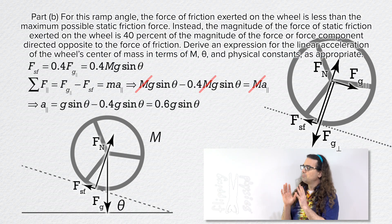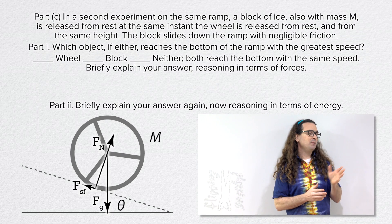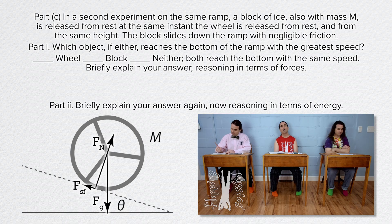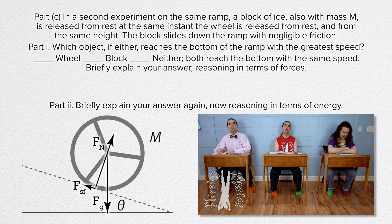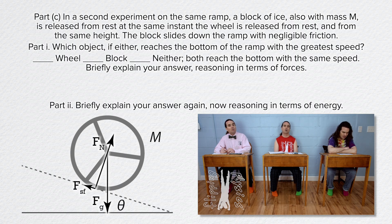Part C: in a second experiment on the same ramp, a block of ice also with mass M is released from rest at the same instant the wheel is released from rest and from the same height. The block slides down the ramp with negligible friction. Part C-i asks which object reaches the bottom with the greatest speed — the wheel, the block, or neither — with reasoning in terms of forces. Part C-ii asks the same question with reasoning in terms of energy.